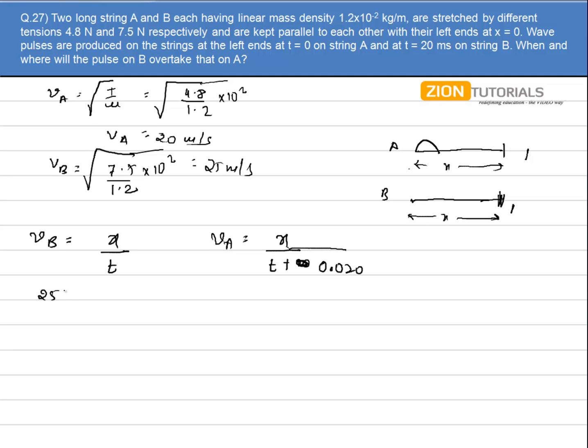Substituting the values, v_B is 25 and v_A is 20. From 25 equals x over t and 20 equals x over t plus 0.020, we get 25t equals 20 times t plus 0.020. So 20t plus 0.4 equals 25t. So 0.4 equals 5t, and t comes out to be 0.08 seconds.